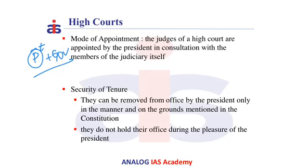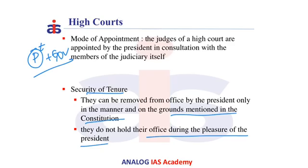The next point is the security of tenure. That is, the Judge of a High Court can only be removed by the President, and only after an address by the Parliament — that is, a resolution for his removal can only be passed in the Parliament. Hence, the Judge can only be removed in the manner and on the grounds which are mentioned in the Constitution. This implies that unlike the Ministers or the Chief Minister of a State, the Judge of a High Court does not hold his office during the pleasure of the President.